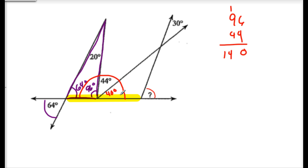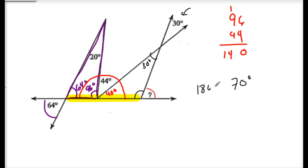So I've got one angle inside my triangle. One of the other angles is vertical with 30 degrees, so this becomes 30. Then 40 plus 30 is 70, and 180 minus 70 gives 110 degrees. So this angle here is 110 degrees.